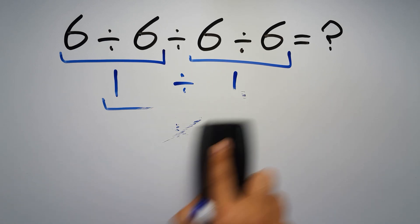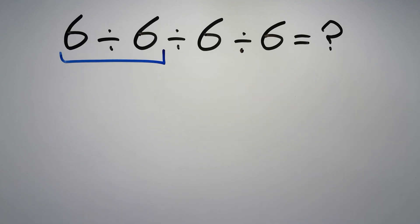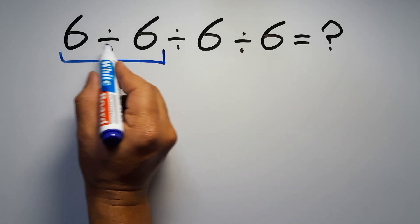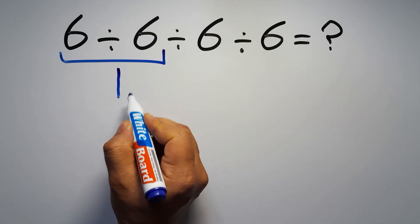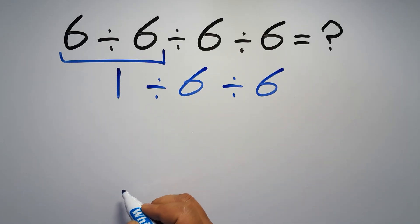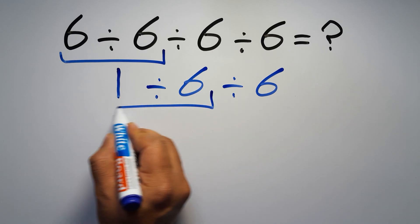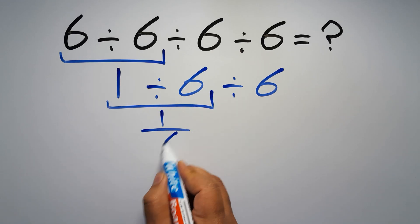Now we have to do this division. 1 divided by 6 can be written as 1 over 6, then divided by 6.